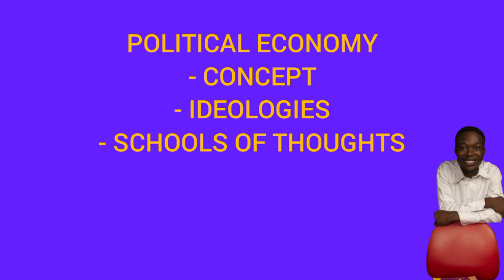We have three schools of thought in political economy. The first is the Marxian school, which holds the socialist and communist view of an egalitarian society — associated with Karl Marx, Engels, and others. The Marxian school advocates that the people should own the means of production and get according to their needs. They were against the exploitation of capitalism.